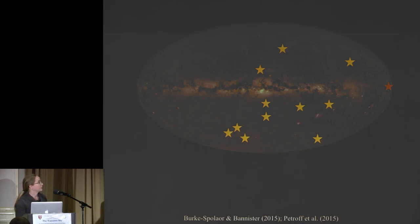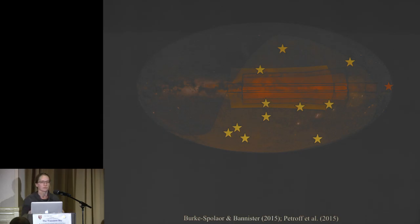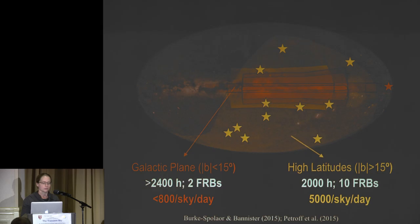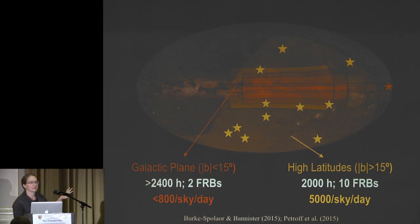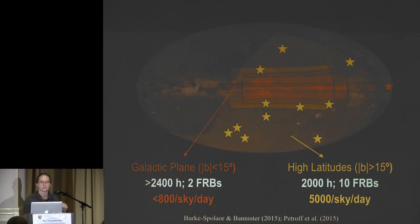An important observed property is the sky distribution. Unlike gamma-ray bursts which are isotropic, fast radio bursts show a deficit in the galactic plane. Even though we've surveyed the galactic plane extensively for pulsars — and pulsar surveys are excellent FRB-finding surveys — we detect far fewer FRBs there. There's roughly a factor of six difference in detection rates between the galactic plane and high latitudes. This is about a four-sigma result, so it may swing either way as we look to the future.